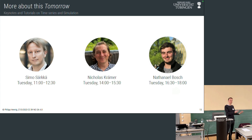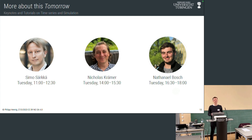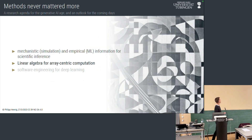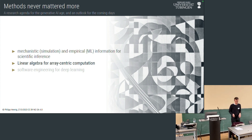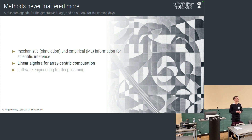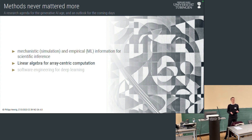This is, for me, the archetype of the kind of algorithms we're looking for — which seamlessly combine computational information and empirical information from data. You'll hear from Simo, Nico, and Nathanael tomorrow how to build such algorithms; Nathanael is actually going to build one with you. So that's my recommendation for what to do if you don't care about AGI at all: just do scientific machine learning. There's a lot of really cool things to do.